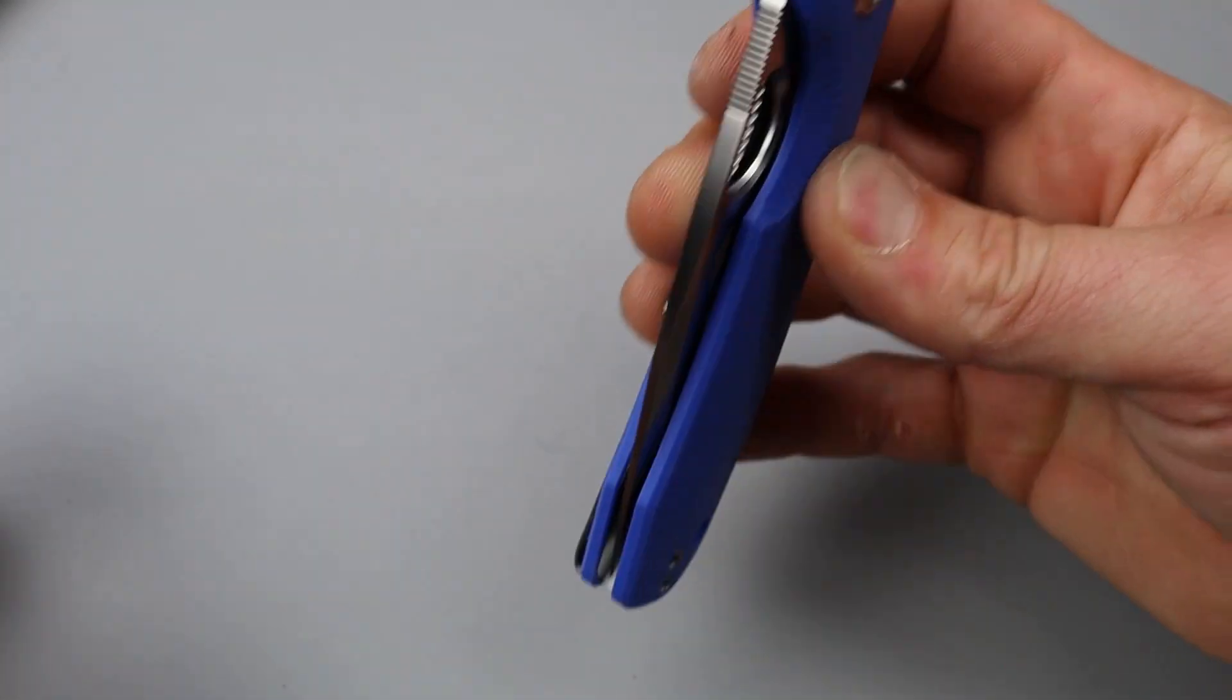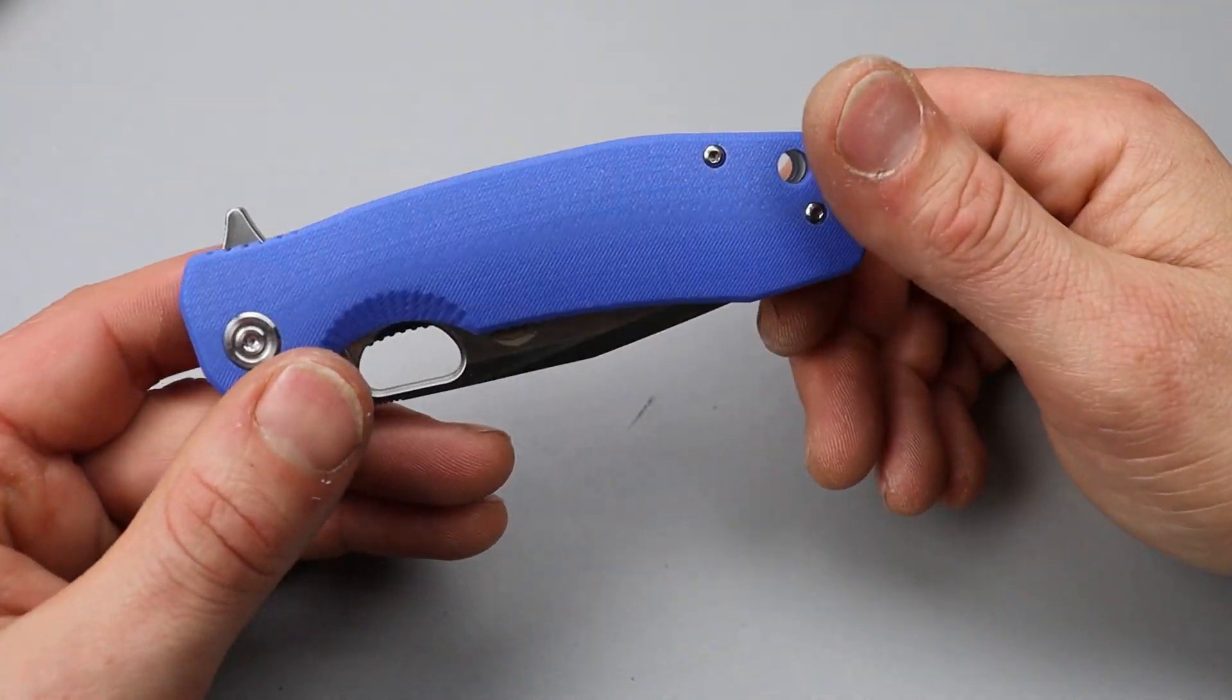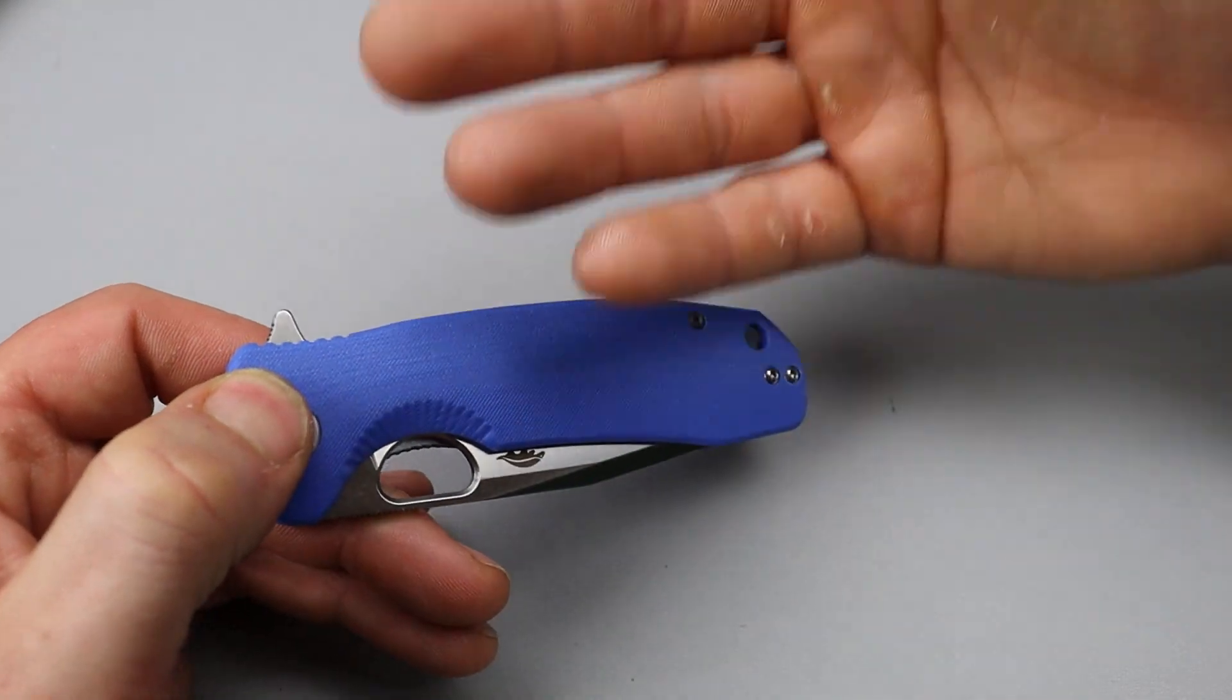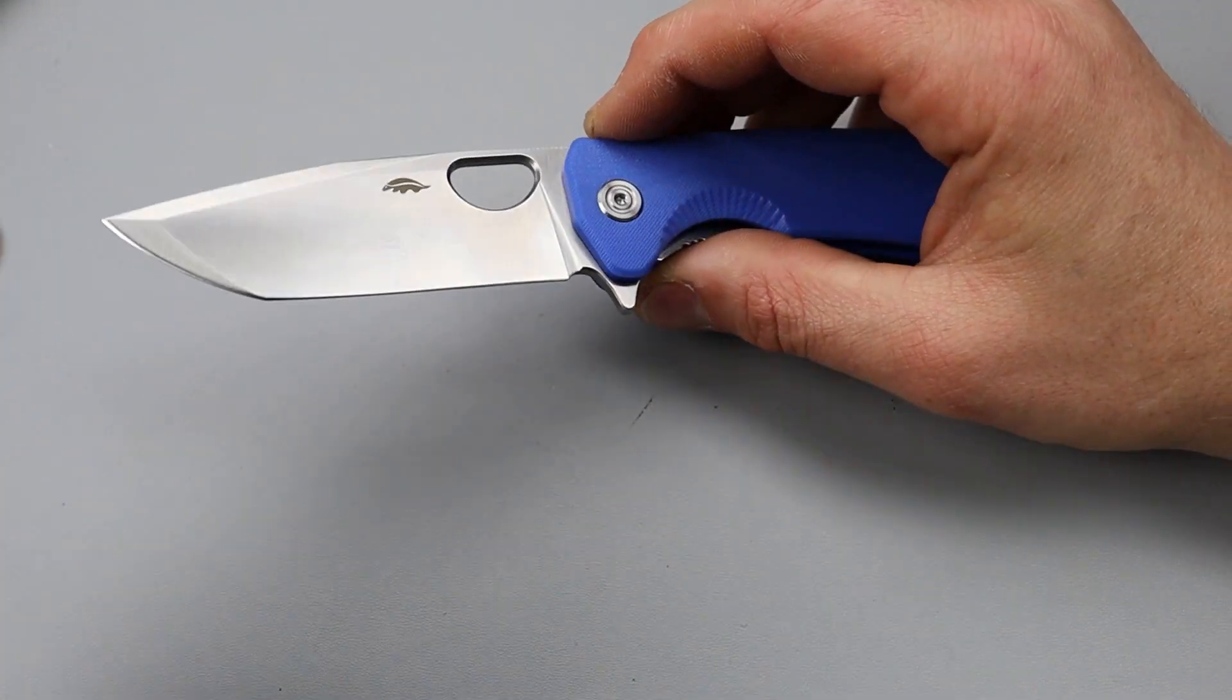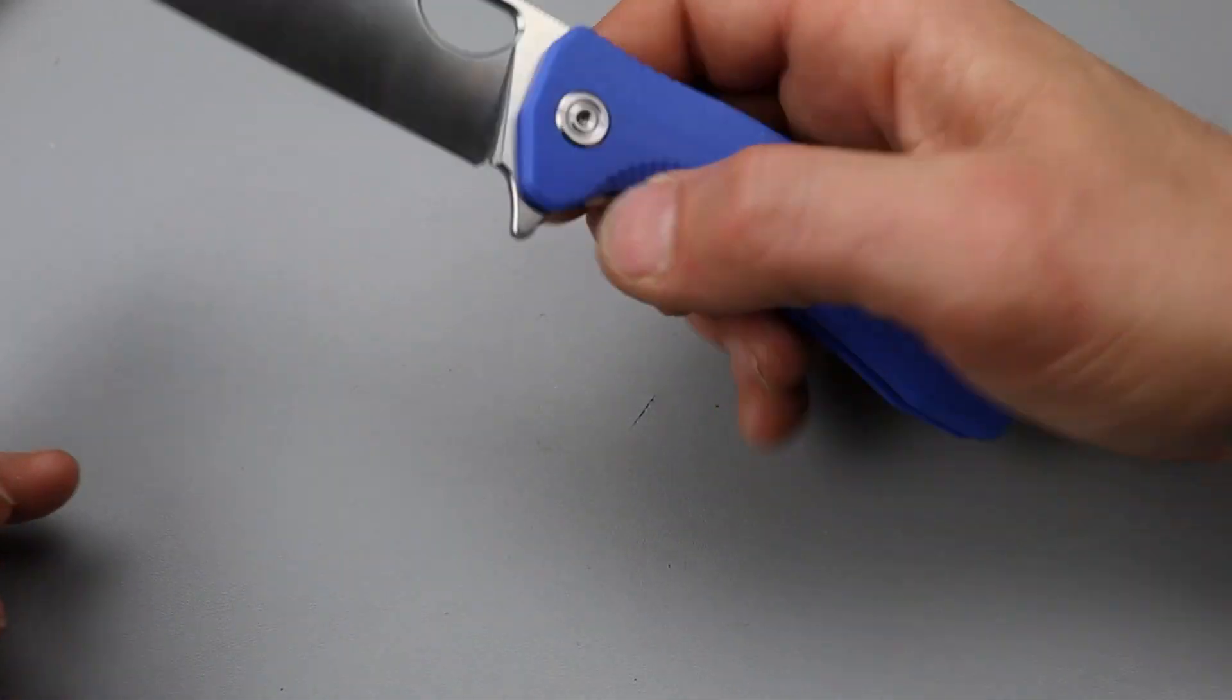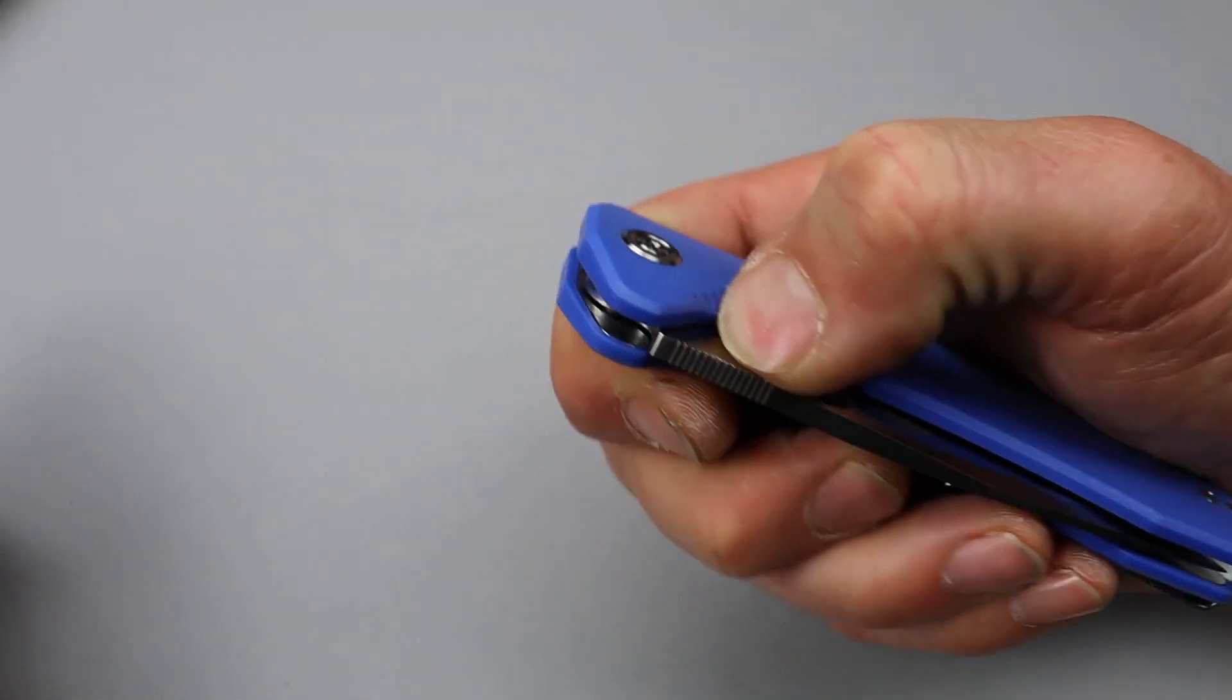They do have one that's already pre-set up which is in DLC. It's a DLC-coated Tonto with G10 scales. So, lots of different options here. You can basically have whatever type of version you want with the Honey Badger.